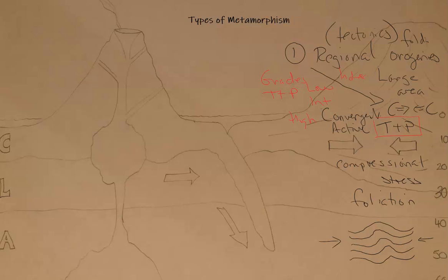On the right-hand side of the diagram I have depth marked. Sea level would be at the top, with the orogen going up in elevation. Depths go down in kilometers: 10, 20, down to 50 and 60. Most higher-grade metamorphic rock exists roughly between 10 and 40 kilometers under the surface.